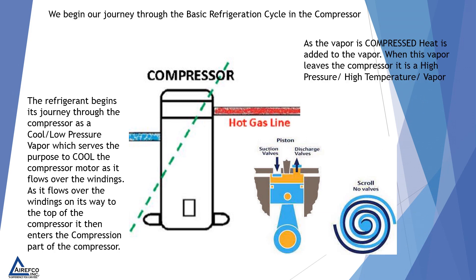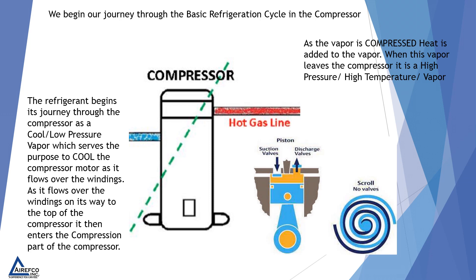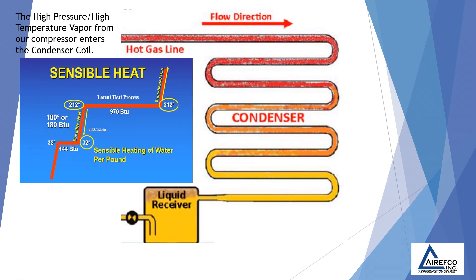As the vapor is compressed, heat is added to the vapor. When this vapor leaves the compressor, it is a high-pressure, high-temperature vapor. The high-pressure, high-temperature vapor from our compressor enters the condenser coil.